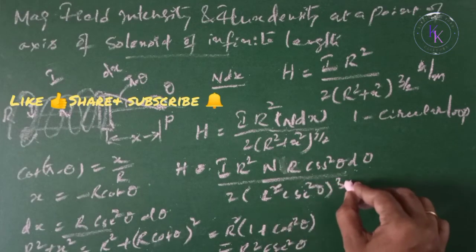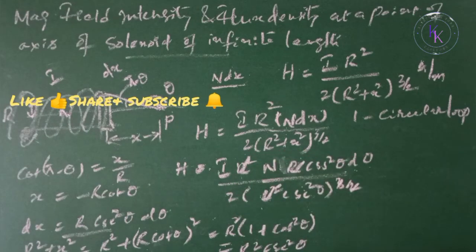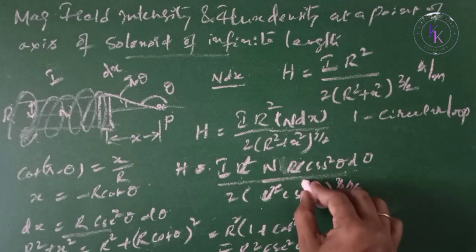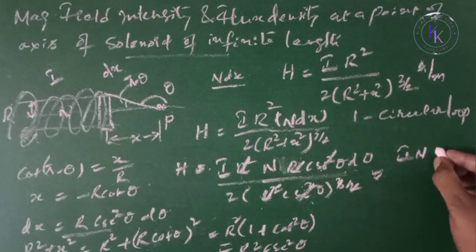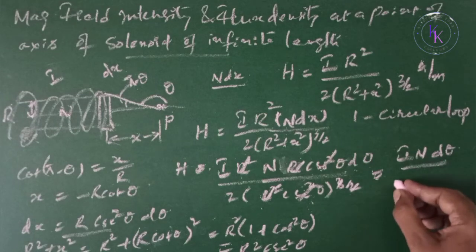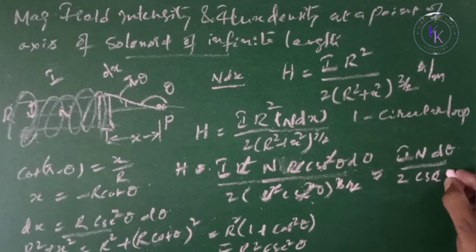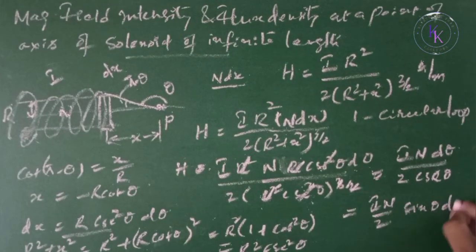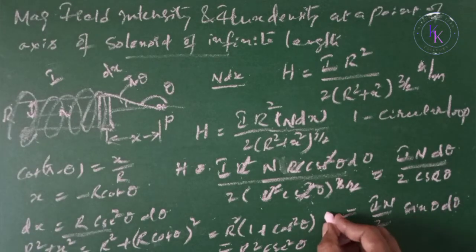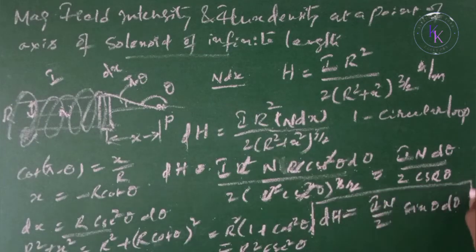So square gets cancelled, three times R will remain in the denominator. Now cosecant squared theta, square gets cancelled three times, so cosecant gets cancelled. Then you are going to get I N d theta divided by 2 cosecant theta, which is I N by 2 sin theta d theta. This is dH.